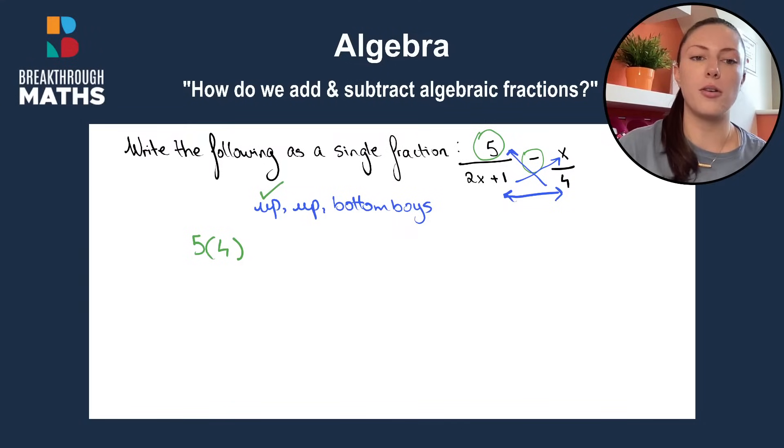We move on to our second up arrow. We start with the next part of the next fraction. So we have x multiplied by what it's connected to, 2x plus one. That's our second up arrow done.